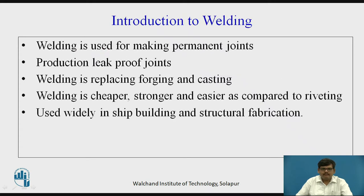Welding is used for making permanent joints. The joints formed with the help of welding are leak proof and give you permanent joints. Welding is a better replacement for forging and casting processes.